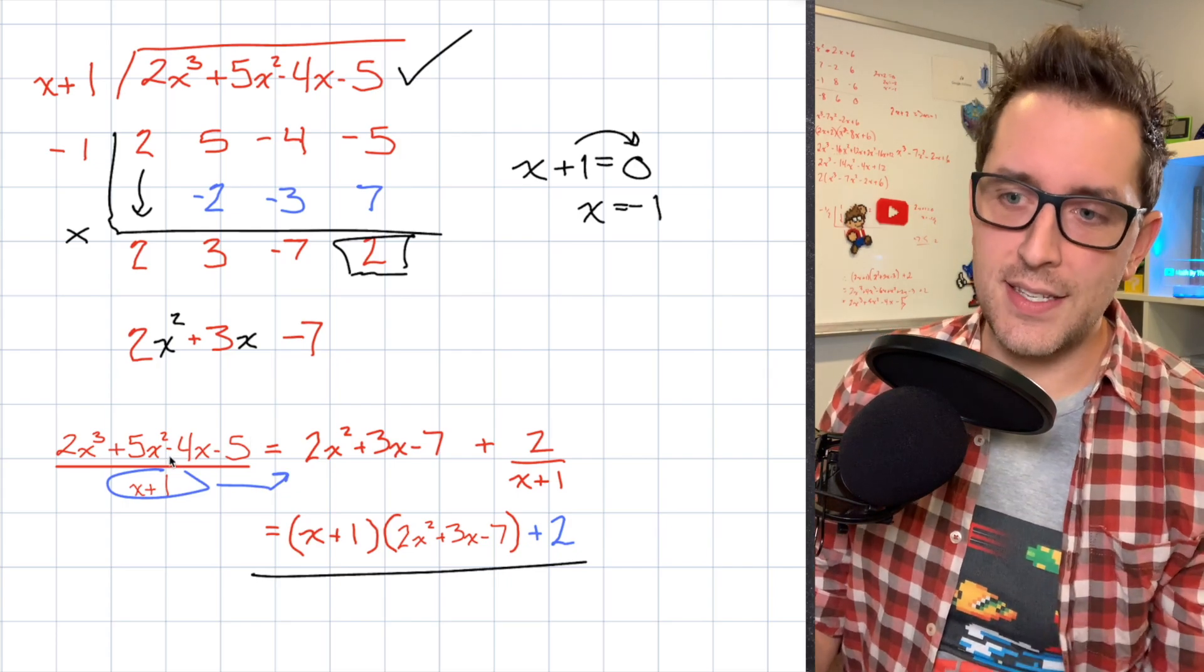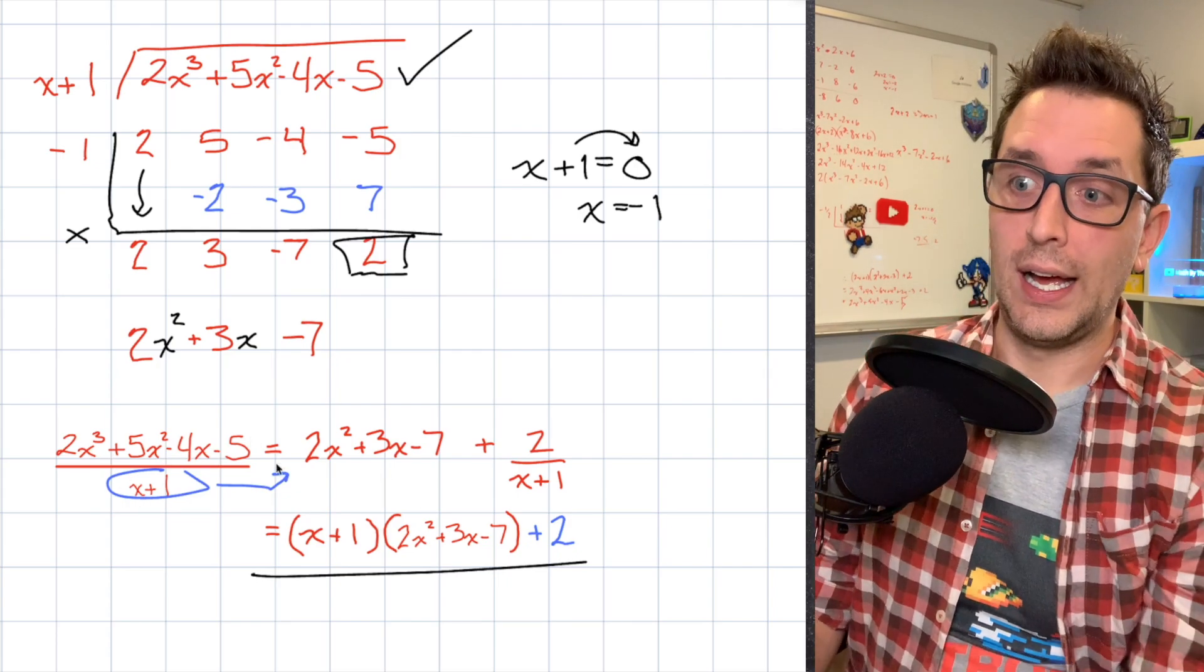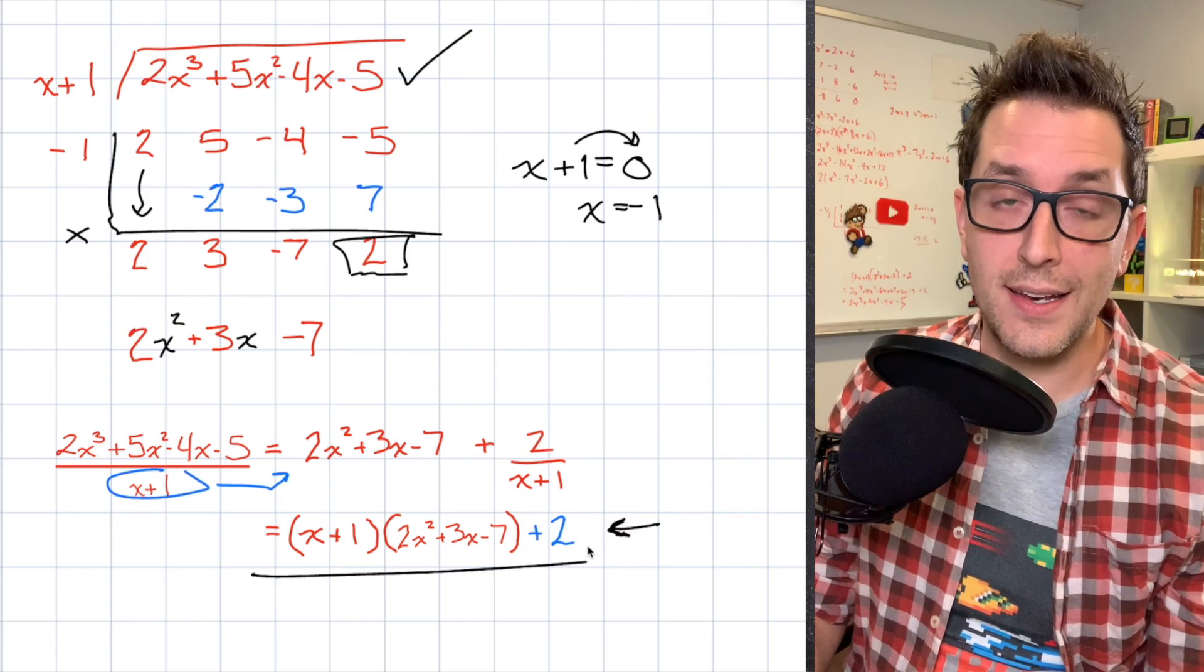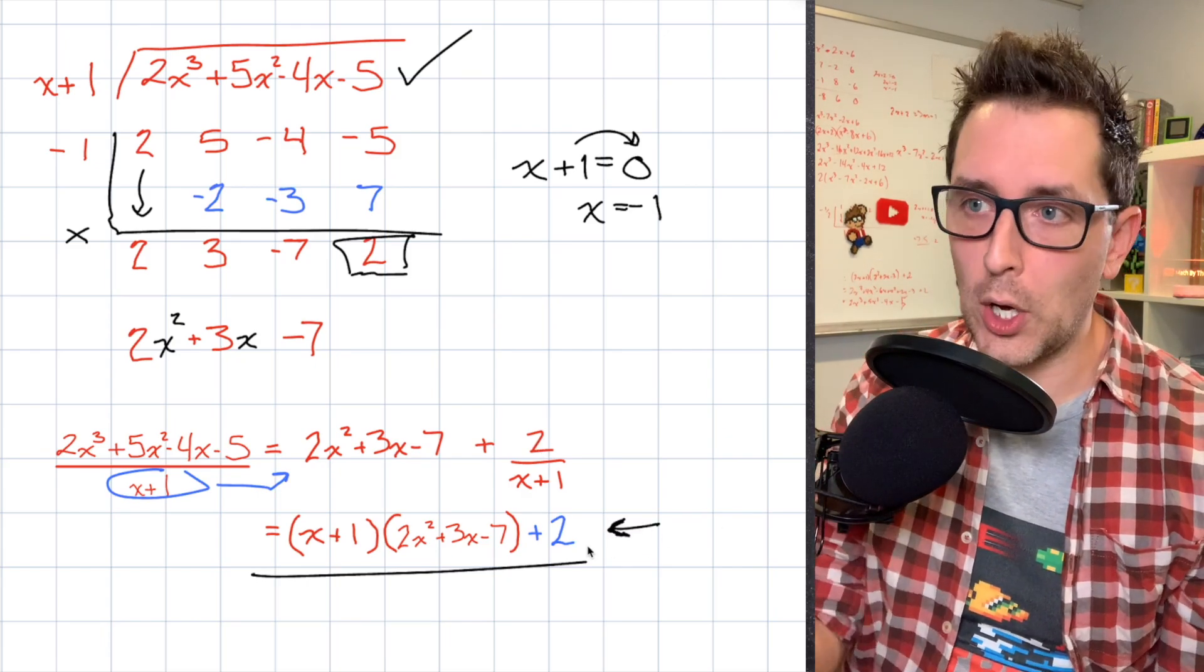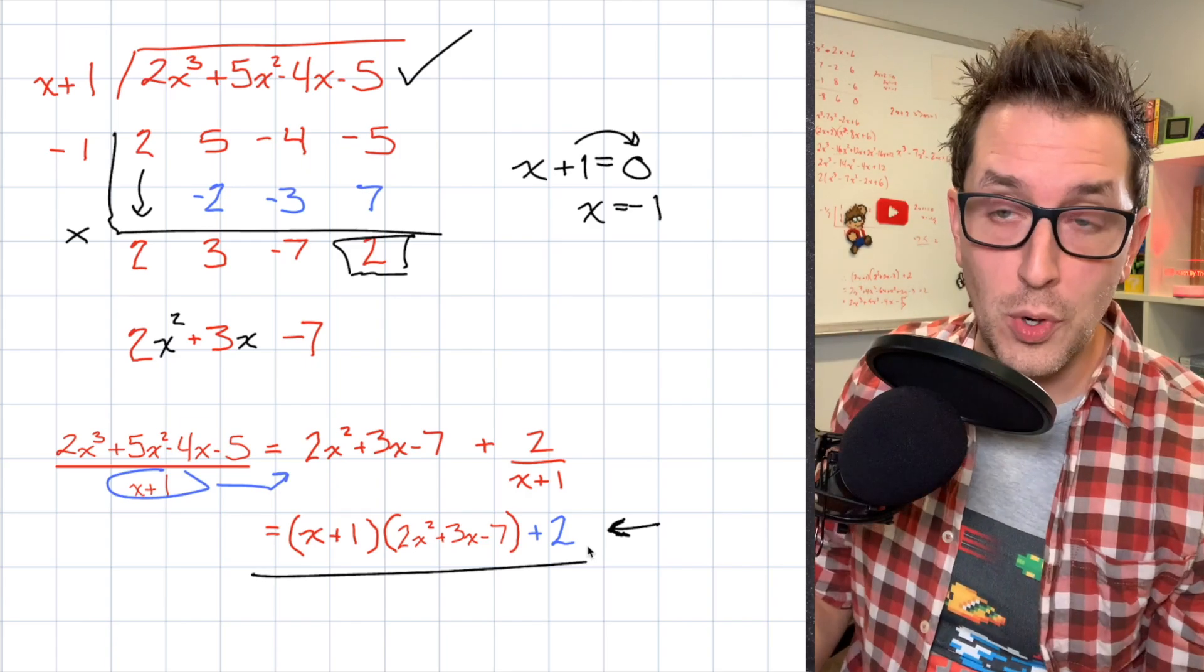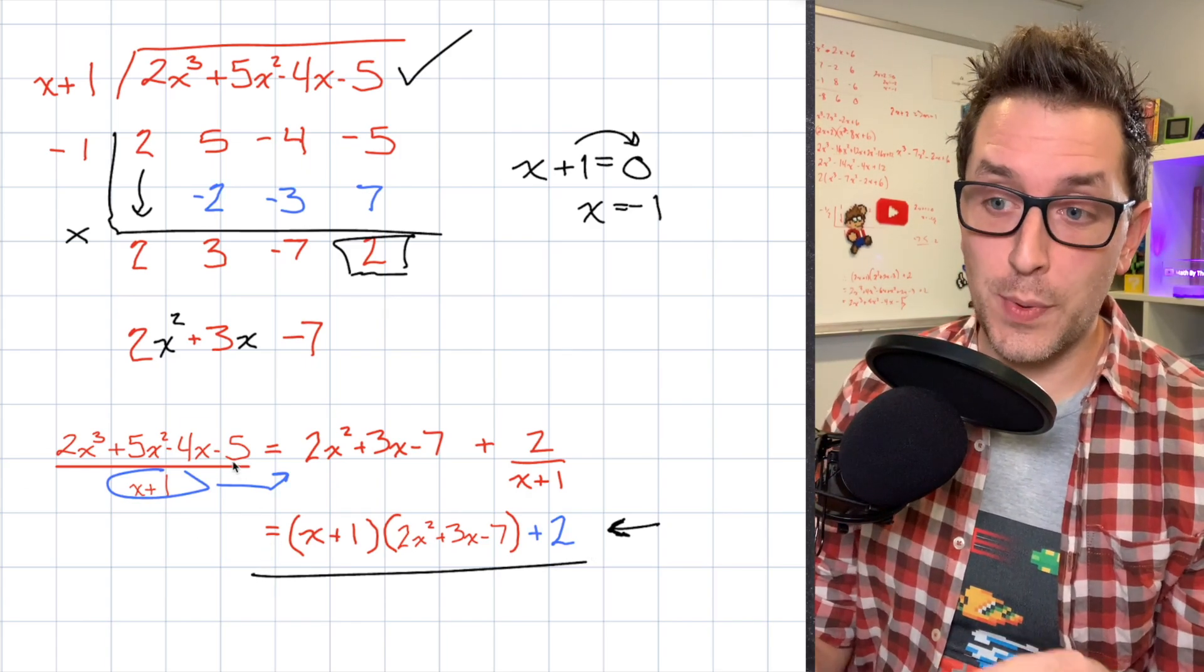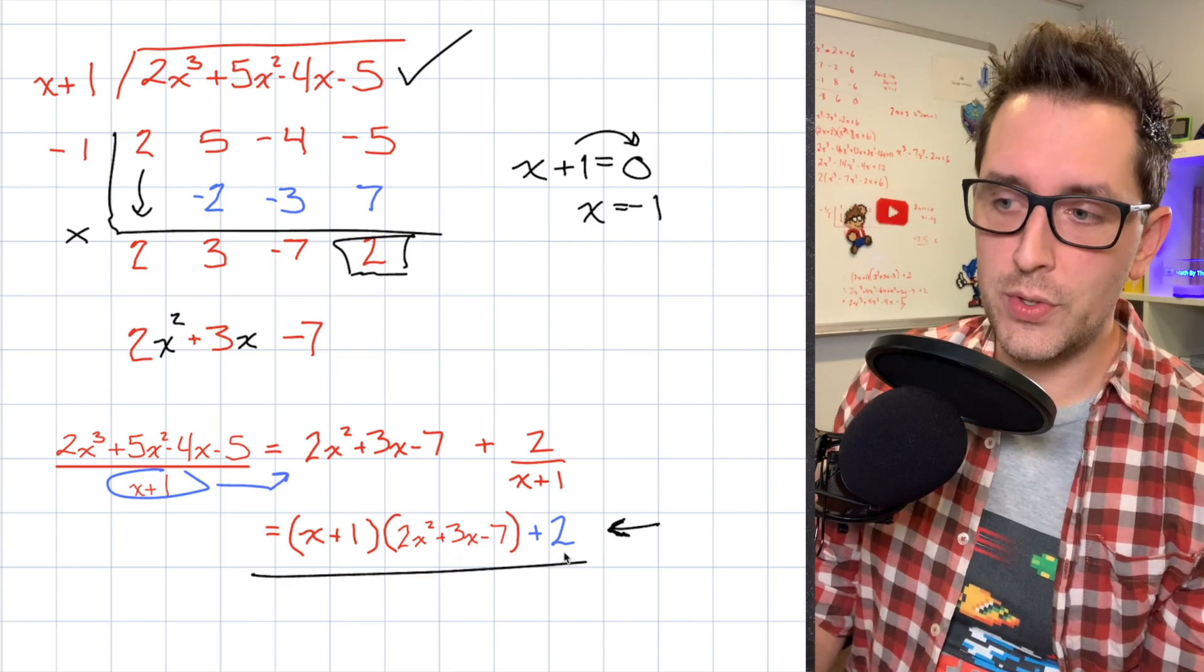And that should make sense. If I take that dividend and divide it by this divisor, I get that expression with a remainder at the end. So this line right here at the end is how a lot of teachers like to see the result of a polynomial long division problem or a synthetic division problem that has a remainder.